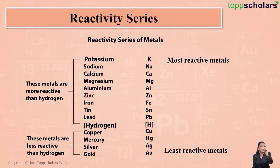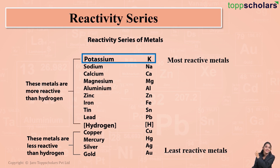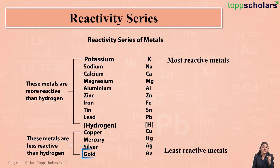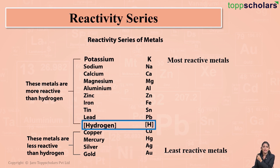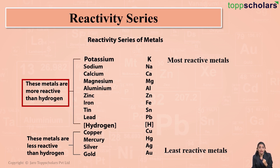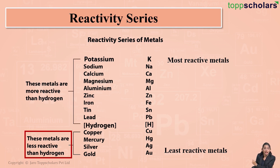The most reactive metal is potassium, because it is placed at the top of the reactivity series, and reactivity decreases as we move down. The least reactive metal is gold, because it is placed at the bottom. We can also observe that hydrogen is placed in between — metals placed above hydrogen are more reactive than hydrogen, and metals placed below hydrogen are less reactive than hydrogen.